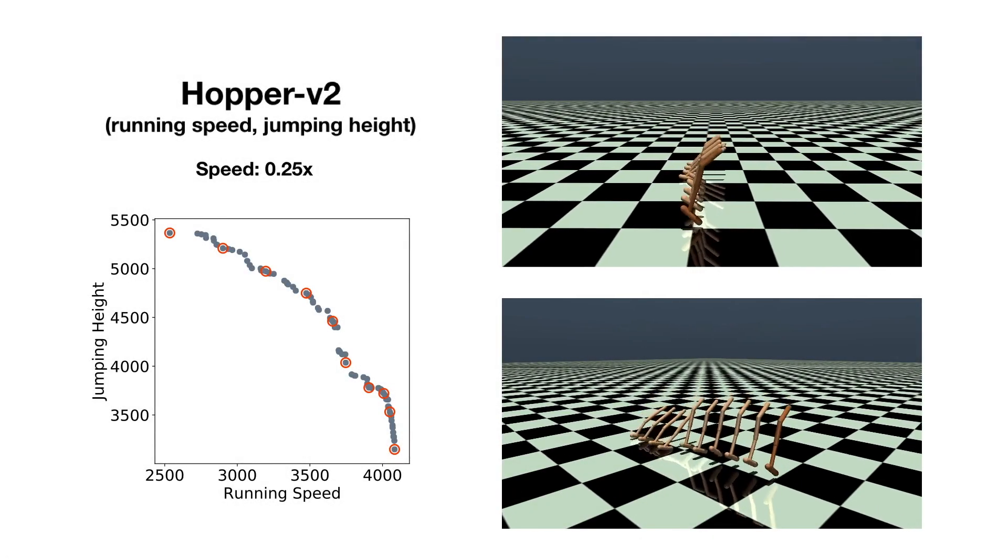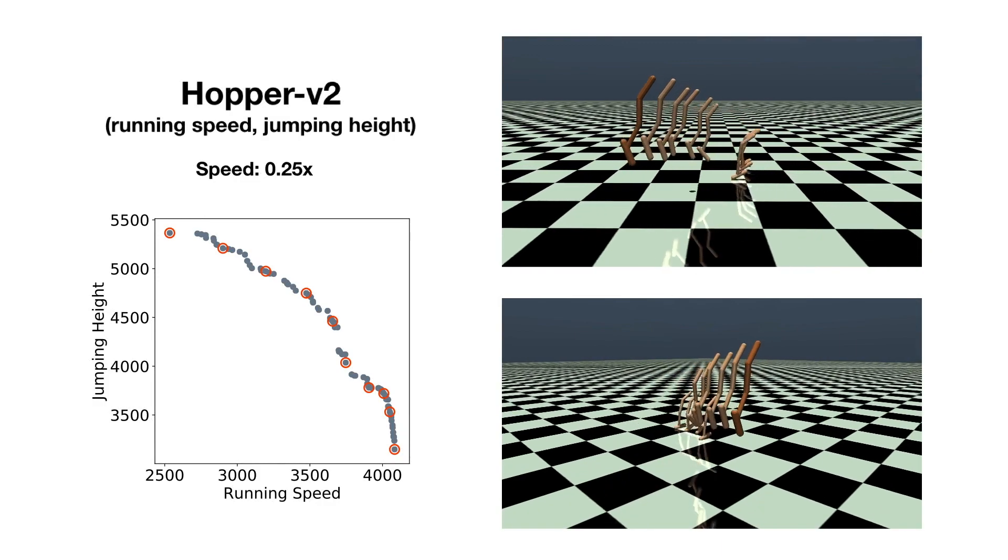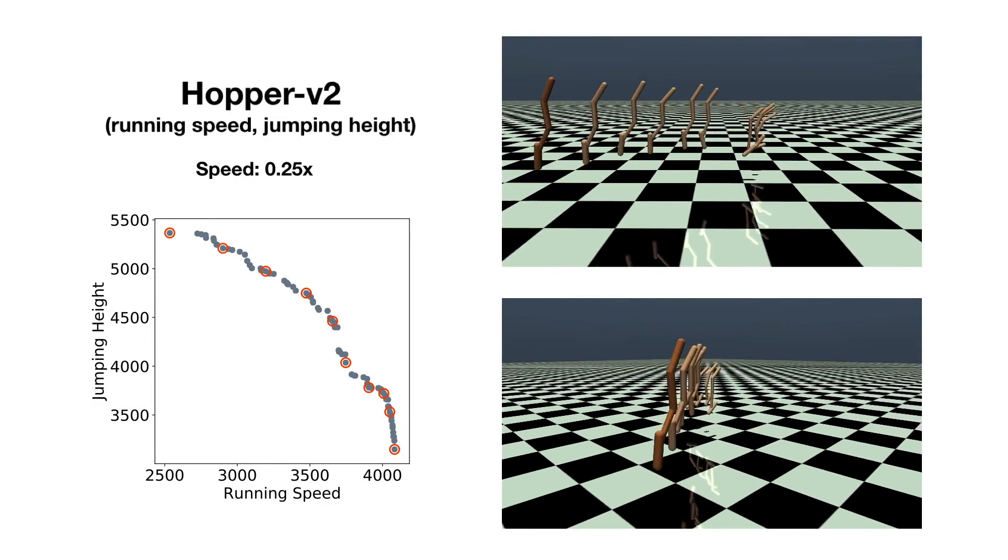For Hopper, the first objective is running speed and the second objective is jumping height.